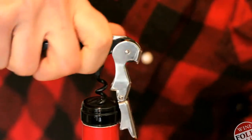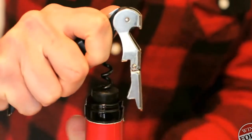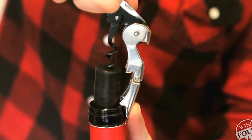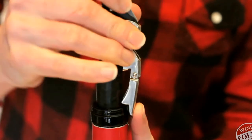Start levering on the first step, and then move up to the second. You can ease the rest of the cork out with your hand.